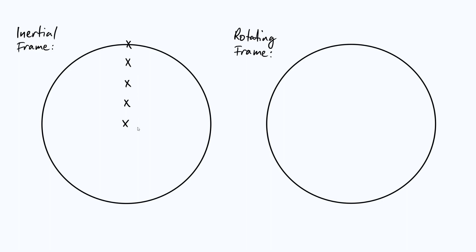Next we're going to introduce our rotating observer. We imagine sitting at the edge of this circle, starting at the bottom — that dot represents the observer watching the motion of the object. Our observer is going to be rotating anticlockwise with an angular speed of omega. At these five instants we've marked, we want to know where the observer is at each particular moment. Because they're rotating anticlockwise with constant angular speed, if we call the initial time t equals zero, the next instant is capital T, then 2T, and so on up to 4T.